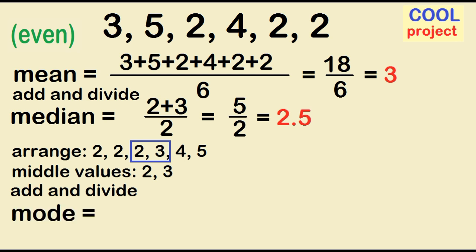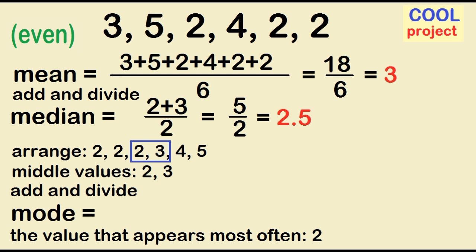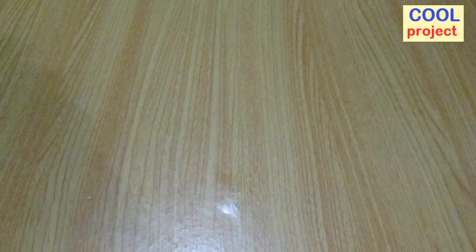Mode is the value that appears most often. 2 appears 3 times, so the mode is 2. Note that the number of data values here is even. Try this.